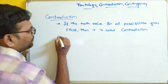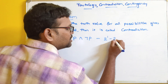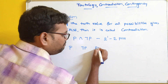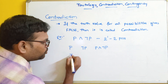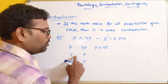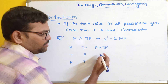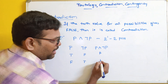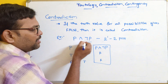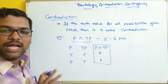Example for contradiction: P ∧ ¬P. With one proposition, there are 2^1 = 2 possibilities. We write columns P, ¬P, P ∧ ¬P. If P is true, ¬P is false; if P is false, ¬P is true. The AND operation gives false if any proposition is false, so: true AND false = false, false AND true = false. The last column gives false for all possibilities — this is a contradiction.